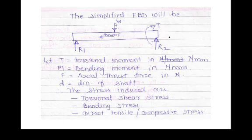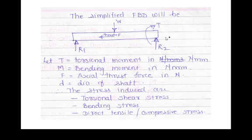Suppose a helical gear is mounted on the shaft. It will have a self weight, and the helical gear creates an axial thrust. The two bearings provide reactions R1 and R2. The shaft is rotated by torque T. Here, T is the twisting moment, M is the bending moment, F is the axial thrust, and D is the shaft diameter to be evaluated.